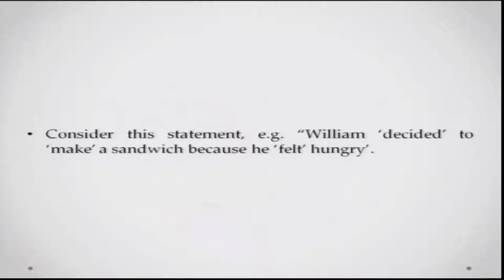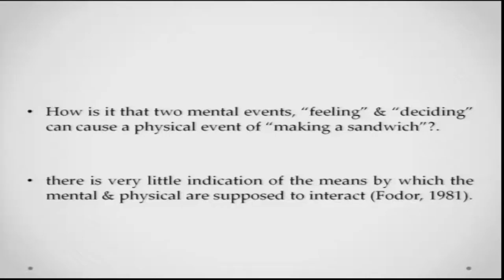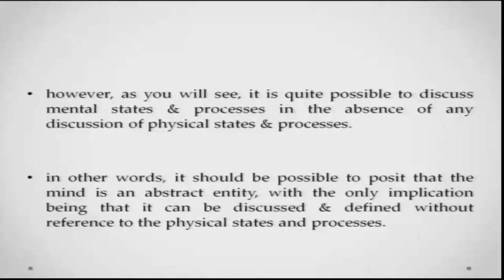Consider this statement for example: William decided to make a sandwich because he felt hungry. If you note, there are two important factors here — the aspect that William is feeling something, which is hunger, and the aspect that William has decided something, that he will make a sandwich. So how is it happening that two mental events — feeling and deciding — are leading to a physical event, that is the making of a sandwich? This is something we are going to talk about in cognitive psychology in more detail. It is quite possible to talk about these mental states and processes in the absence of any discussion of physical states and processes.